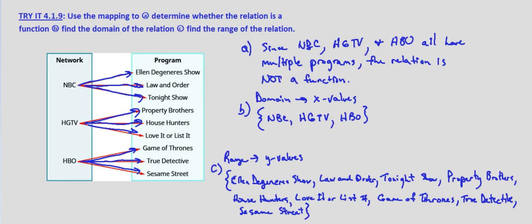So again, just to recap, because each input has multiple outputs, the relation is not a function. And that would be the case even if one input had multiple outputs. If it fails the test of each input only having one output, then it's not a function. The domain, as always, is the set of x values, and the range, as always, is the set of y values.